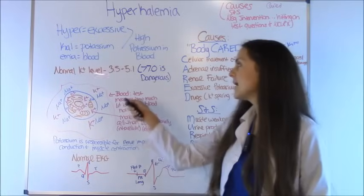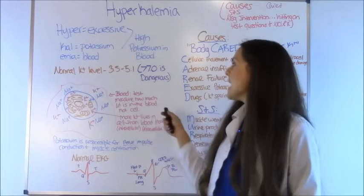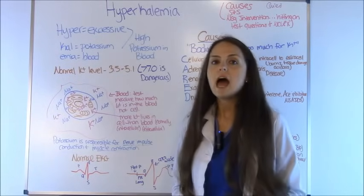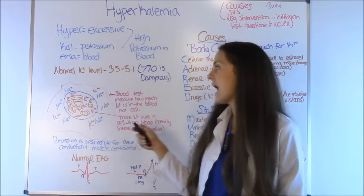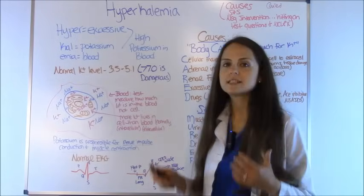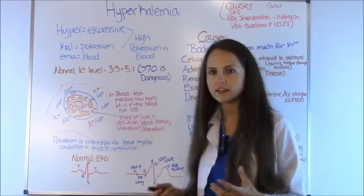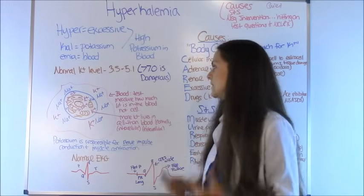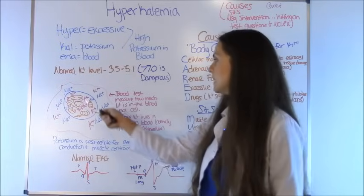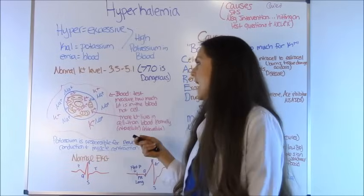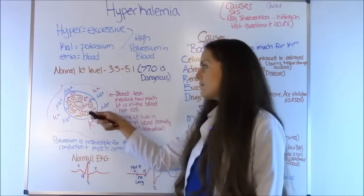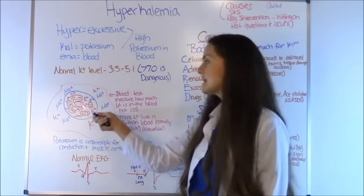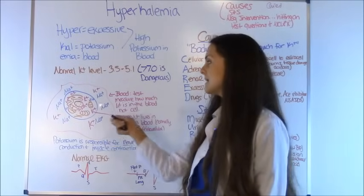First, let's talk about hyperkalemia. Whenever I have these big words, I like to break them apart because you have a lot of hyper and hypo conditions and you need to know exactly what you're dealing with. Hyper means excess or high. Kal means potassium, that's the root word for potassium. And emia means blood. So you put it all together: high potassium in the blood. A normal potassium level is 3.5 to 5.1, some books say 3.4 to 5.2, depends on who you're asking. Anything higher than 7 is dangerous and the patient needs interventions fast.